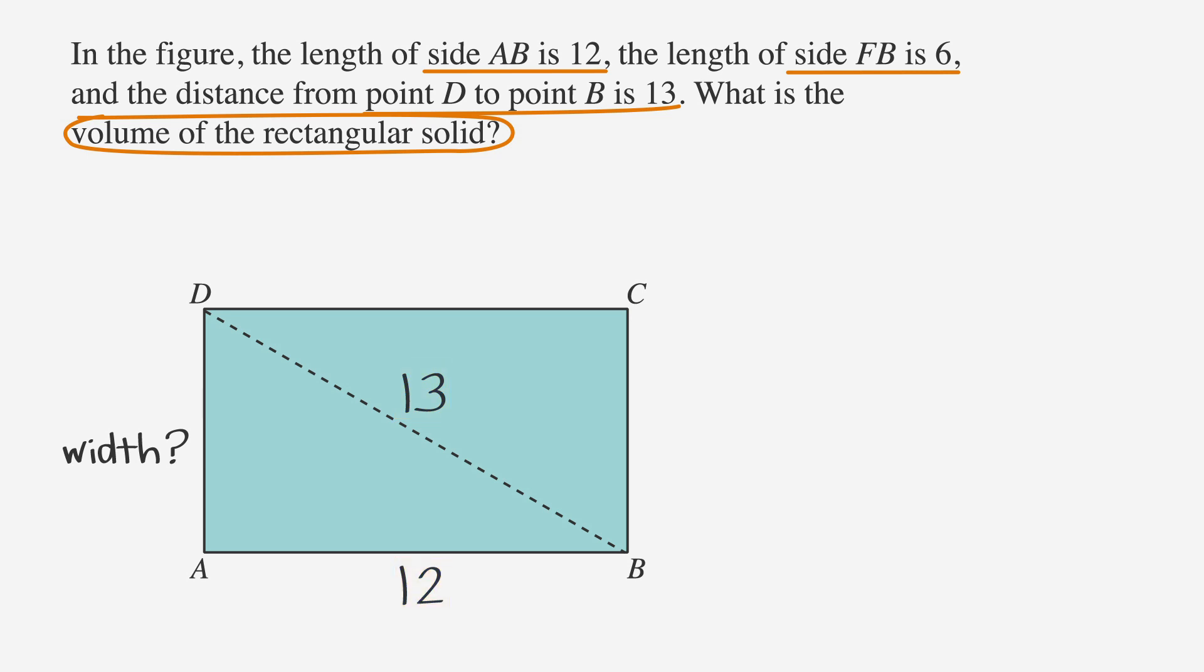Because the diagonal of the rectangle, the width, and the length make up a right triangle, we can solve for the width of the rectangle using the Pythagorean theorem. Just in case you forgot, the Pythagorean theorem is A squared plus B squared equals C squared. In this case, the Pythagorean theorem tells us that the square of DB is equal to the square of AB plus the square of AD.